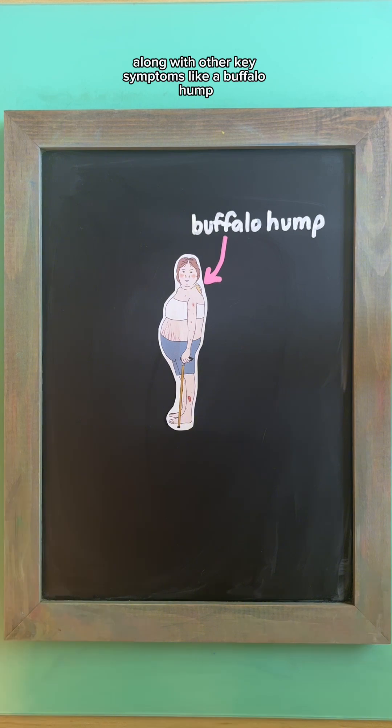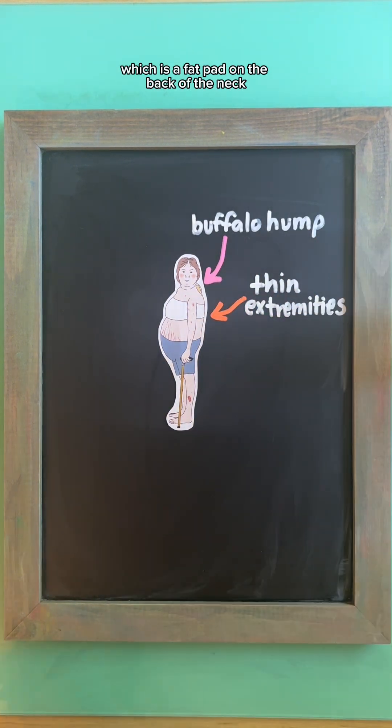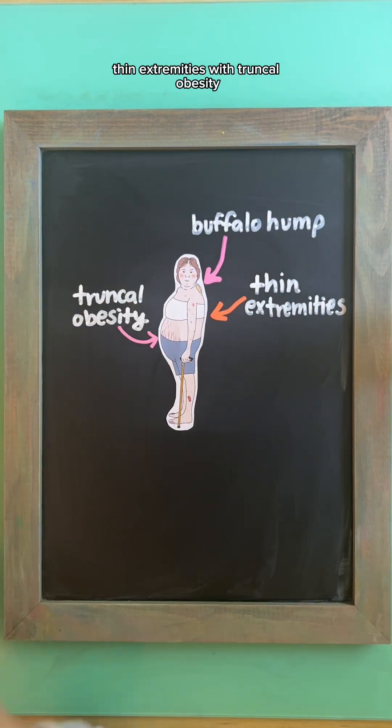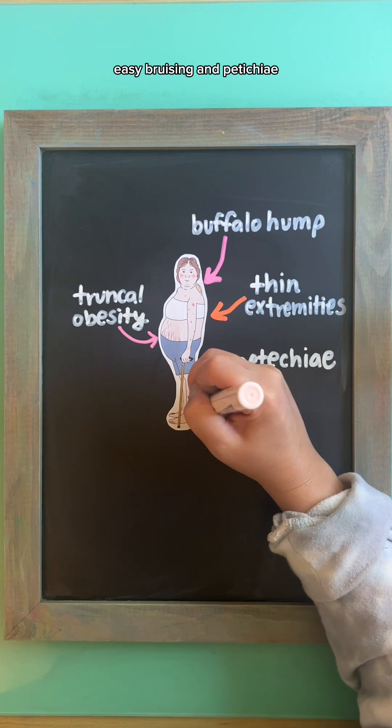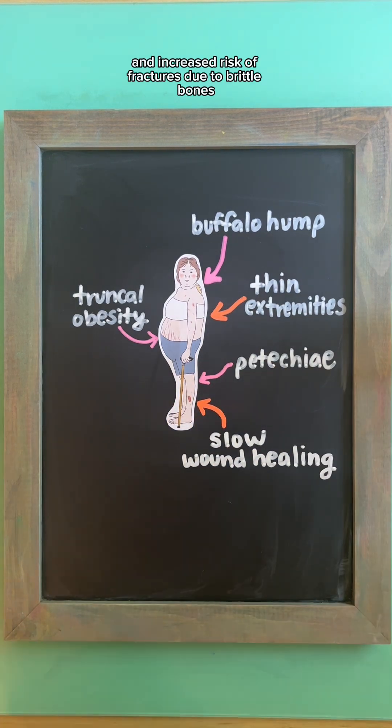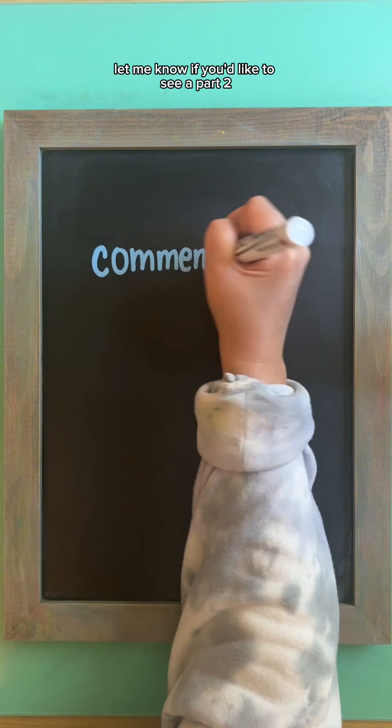Along with other key symptoms like a buffalo hump, which is a fat pad on the back of the neck, thin extremities with truncal obesity, easy bruising and petechiae, slow wound healing, and increased risk of fractures due to brittle bones from increased steroid levels.